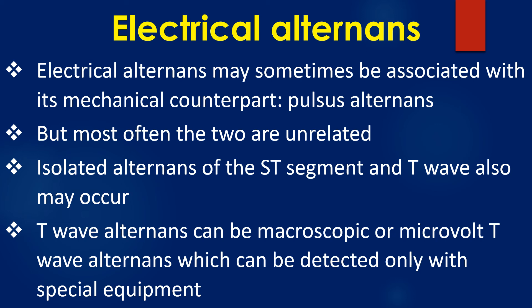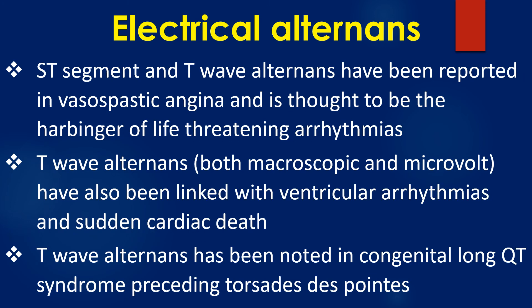Isolated alternance of the ST segment and T wave may also occur. T wave alternance can be macroscopic or microvolt T wave alternance, which can be detected only with special equipment. ST segment and T wave alternance have been reported in vasospastic angina and are thought to be the harbinger of life-threatening arrhythmias. T wave alternance, both macroscopic and microvolt, have also been linked with ventricular arrhythmias and sudden cardiac death. T wave alternance has been noted in congenital long QT syndrome preceding torsades de pointes.